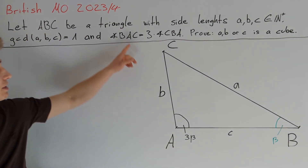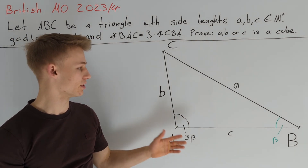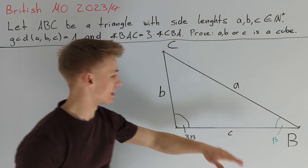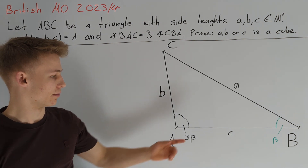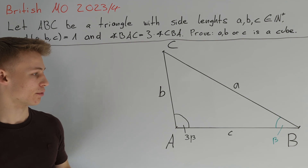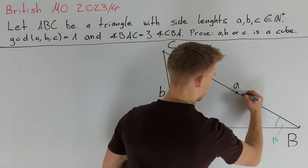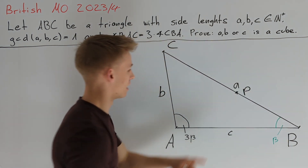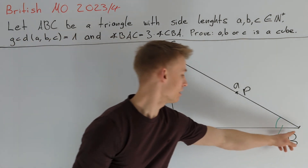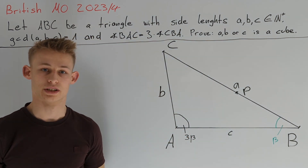We want to use this angle condition, and our idea is to draw in some new points and lines into the picture so that we have the angle beta at some other points and also multiples of beta at other points. One good idea is to draw in a point P on the line BC such that P lies on the perpendicular bisector of AB, so that angle BAP is also equal to beta.